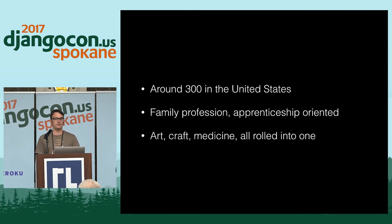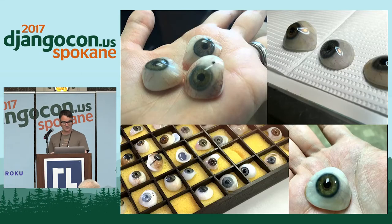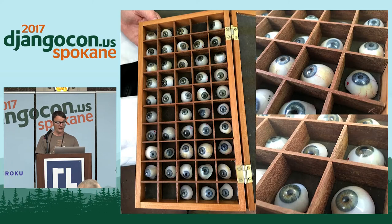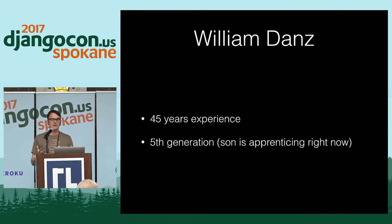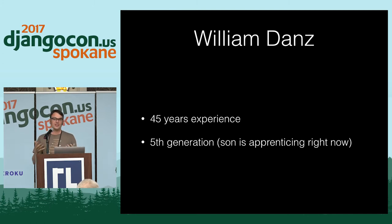I talked to four ocularists in the San Francisco Bay Area. One of the things I asked was, show me your eyes. I met this guy who had a beautiful box of eyes — that's the guy I ended up picking. His name is William Danz. He's been doing this for 45 years and is a fifth-generation ocularist, his family making eyes originally out of glass and these days out of acrylic plastic and oil paints. His son is apprenticing under him — a sixth-generation ocularist.